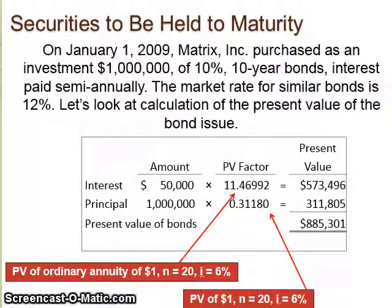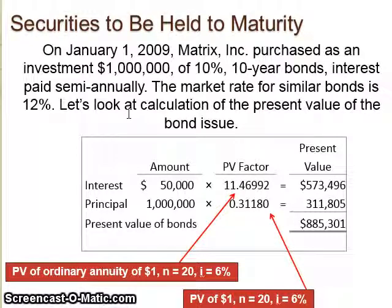Looking at it, it says January 9, 2009, Matrix Inc. purchased as an investment $1 million of 10% 10-year bonds, interest paid semi-annually. The market rate for similar bonds is 12%. So right now, if the market rate is paying 12% and your bond is only offering 10%, you already know you're dealing with a discount — you have to offer a discount, otherwise why would anybody buy your bond if the market is paying 12%?